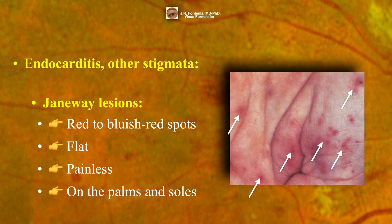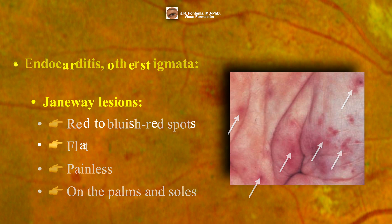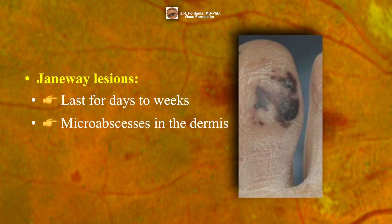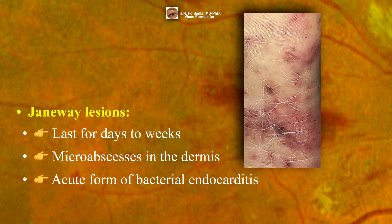Janeway lesions are irregular, flat, non-tender hemorrhagic macules located in the palms, soles, center and hypothenar eminences of the hands, and plantar surfaces of the toes. Always remember, they are not painful in nature. They typically last for days to weeks. Janeway lesions consist of micro-abscesses in the dermis with thrombosis of small vessels without vasculitis, and are usually seen with the acute form of bacterial endocarditis.